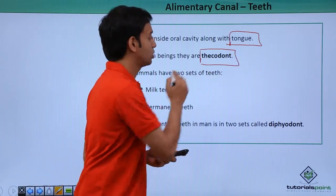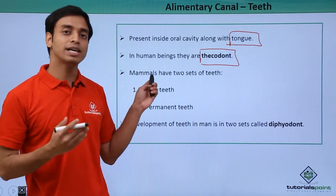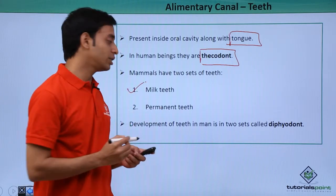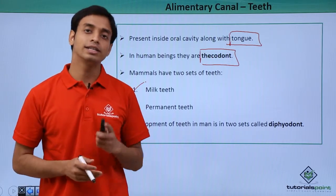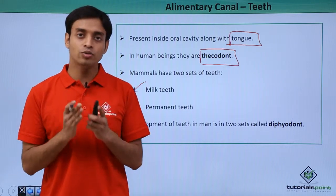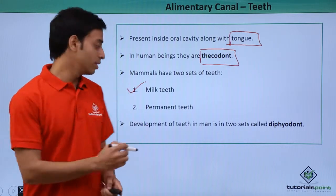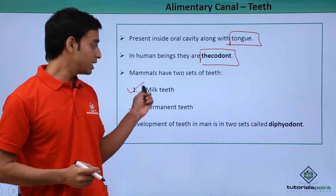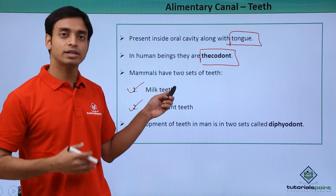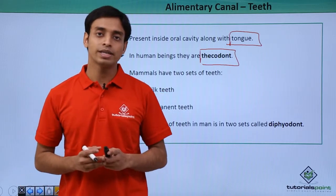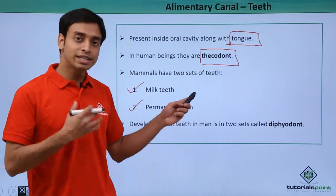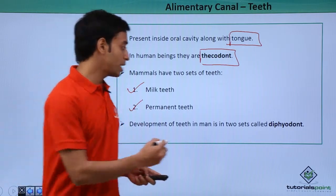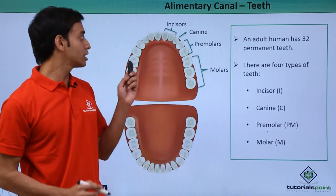Since the teeth are embedded inside the socket of the jawbone, this type of arrangement is known as the thecodont type of teeth. In case of mammals, they have two sets of teeth during their lifetime. The first is known as the milk teeth, also called temporary or deciduous teeth, because these are temporary — they fall off and are replaced by the permanent teeth, also known as adult teeth. Since human beings have two sets of teeth, this arrangement is known as the diphyodont type.